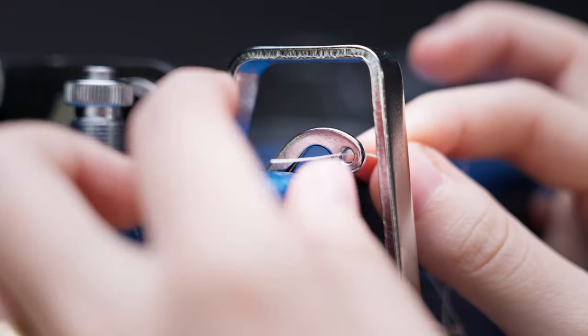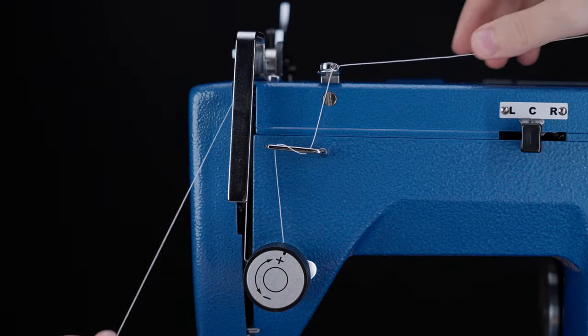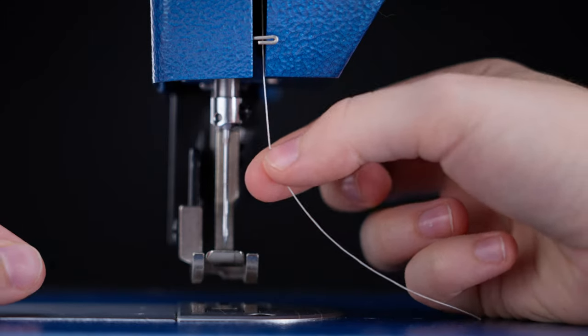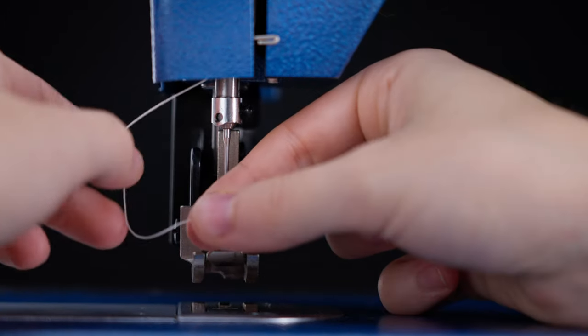Next, pass the thread through the take-up arm from right to left and then under the end cover. Make sure that the thread goes behind the small metal pip when you do so.